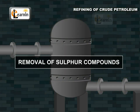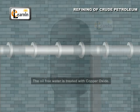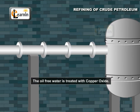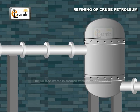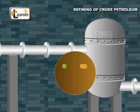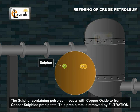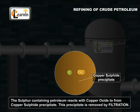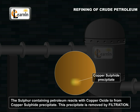Removal of sulfur compounds. The oil, free from water, is treated with copper oxide. The sulfur-containing petroleum reacts with copper oxide to form a copper sulfide precipitate. This precipitate is removed by filtration.